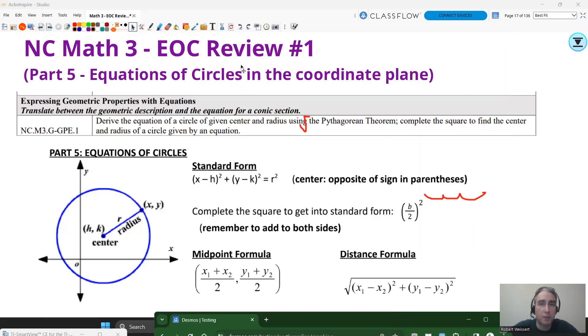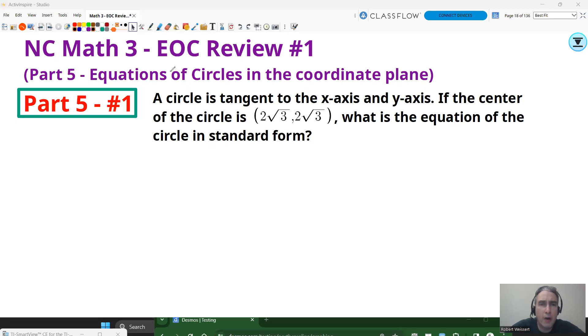Let's go to a couple examples. All right, part five, number one, a circle is tangent to the x-axis and y-axis. If the center of the circle is 2√3 comma 2√3, what is the equation of the circle in standard form?